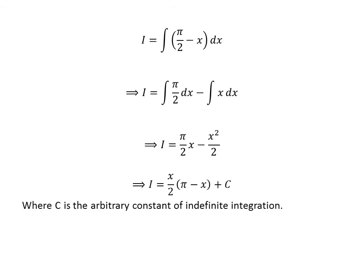Taking the common factor x over 2 out, we get I is equal to x over 2 times pi minus x, and then added capital C, which is the arbitrary constant of indefinite integral. Do not forget to add this constant in the end of any indefinite integration.